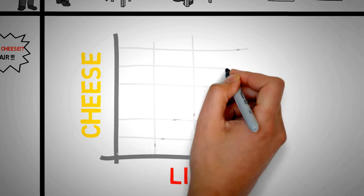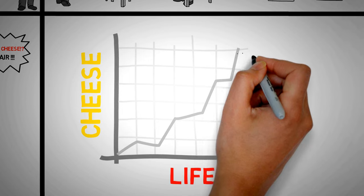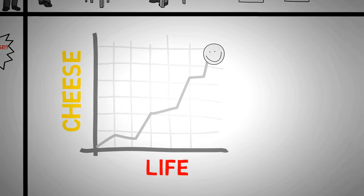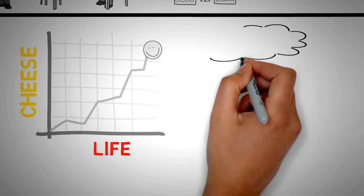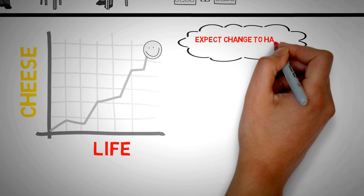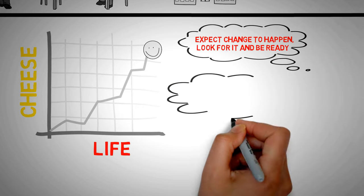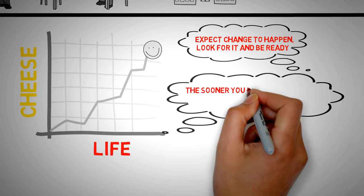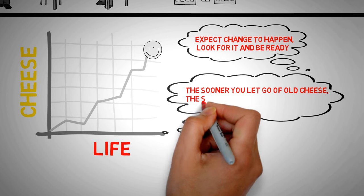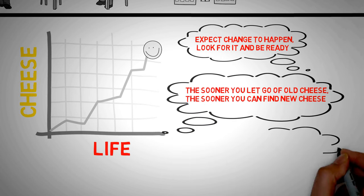Hem and Haw remained bitter and angry about not having their old cheese, complaining how life was unfair to them. They got used to being comfortable and were now afraid to go find new cheese. They got stuck in a habit of doing the same things over and over again and wondering why things didn't get better.